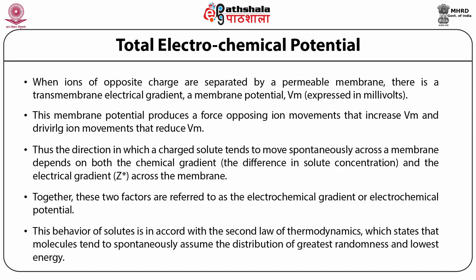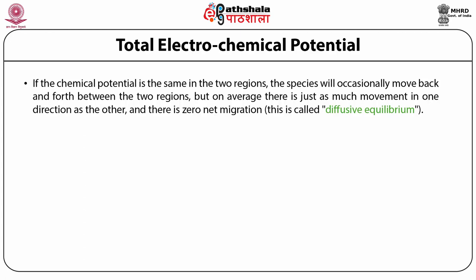This behavior of the solute is in accordance with the second law of thermodynamics, which states that molecules tend to spontaneously assume the distribution of greatest randomness and lowest energy. If the chemical potential is the same in both regions, species will occasionally move back and forth between the two regions, but on average there is just as much movement in one direction as another.